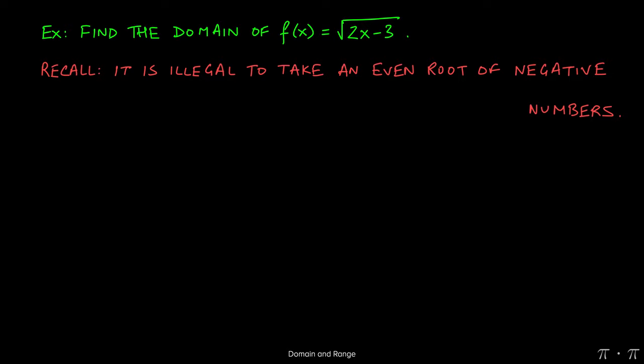So that means you cannot find the square root, fourth root, sixth root, eighth root, and so on. If the index is even, you cannot find the even root of a negative number. So it's illegal to find the square root of negative 4. It's illegal to find the fourth root of negative 16.